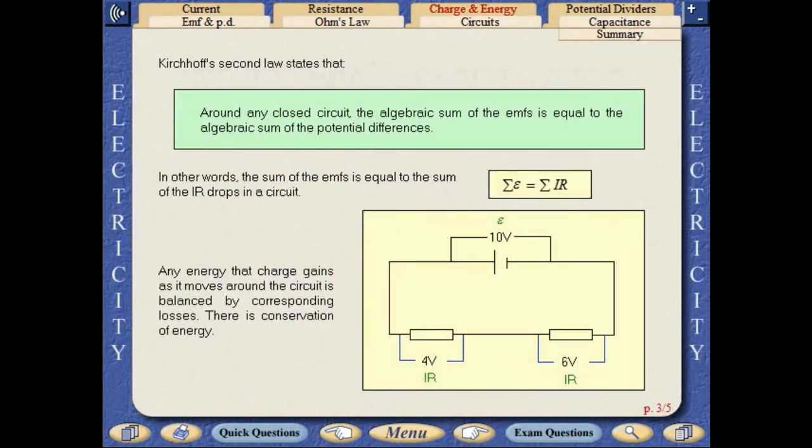Kirchhoff's second law states that around any closed circuit, the algebraic sum of the EMFs is equal to the algebraic sum of the potential differences. In other words, the sum of the EMFs is equal to the sum of the IR drops in a circuit. Any energy that charge gains as it moves around the circuit is balanced by corresponding losses. There is conservation of energy.